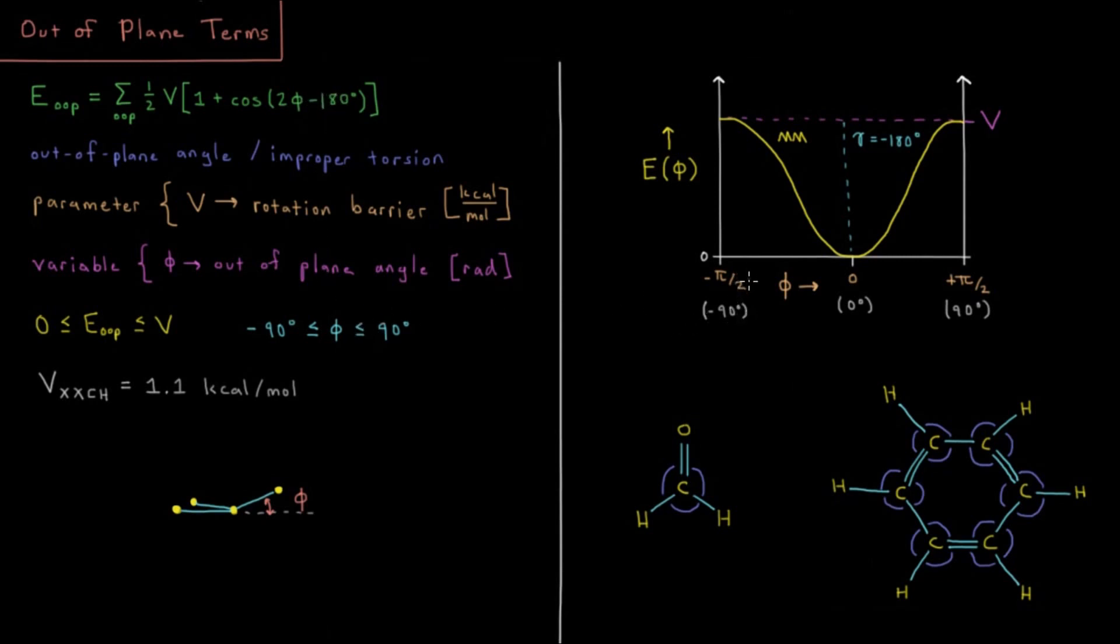The domain of this goes from negative pi over two up to plus pi over two, negative 90 degrees up to plus 90 degrees. Our function here is going to have a minimum at zero degrees because we have an offset of negative 180 degrees in the gamma value from the torsion energy. Any deviation away from that is penalized in molecular mechanics.